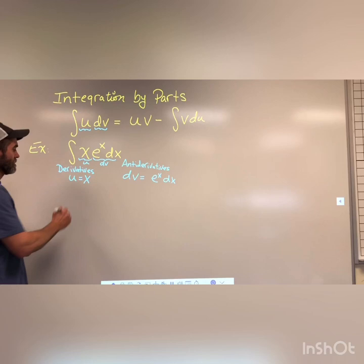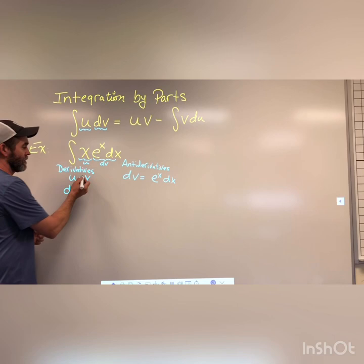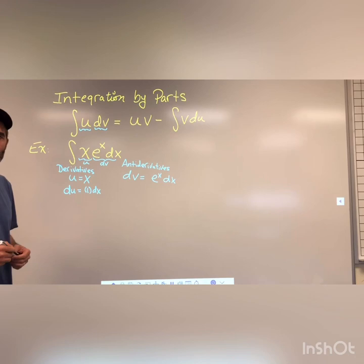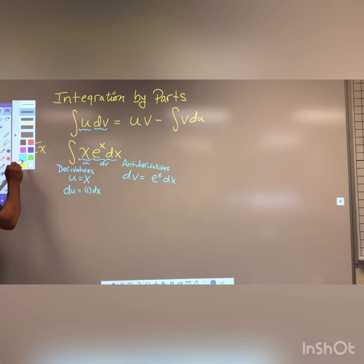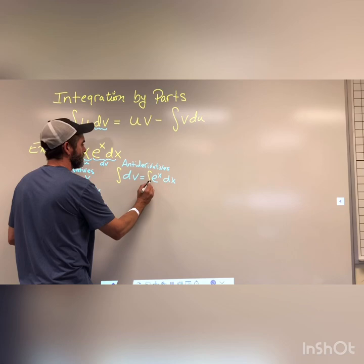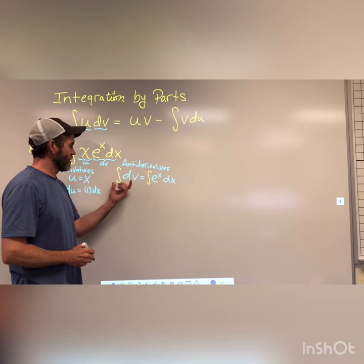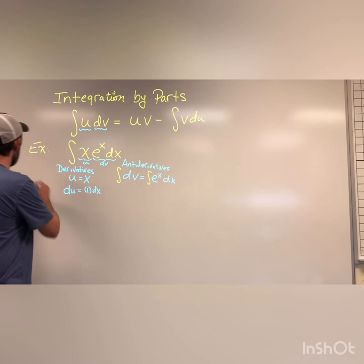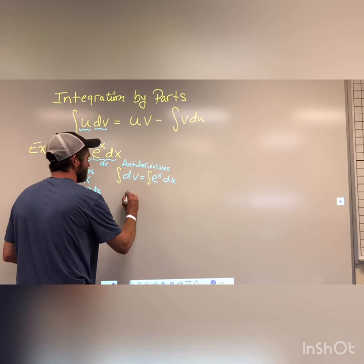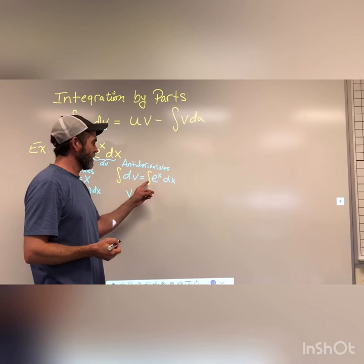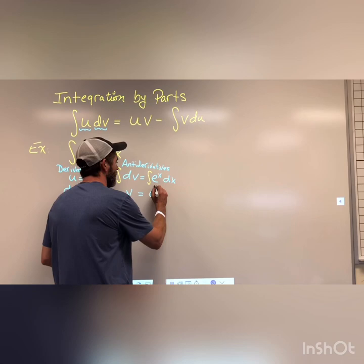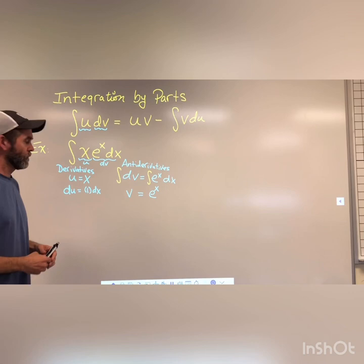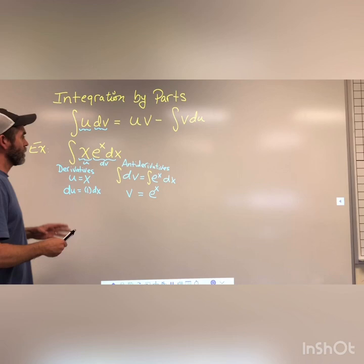Now let's take the derivative of u to get du. The derivative of x is 1, so du = 1·dx. Over in the dv column, I take the anti-derivative. Just as the anti-derivative of dx was x, the anti-derivative of dv is v. So v equals the anti-derivative of eˣ, which is just eˣ. We don't need to add +C here — we do that at the very end.